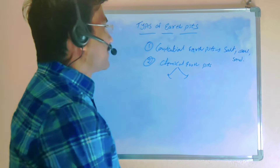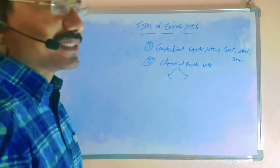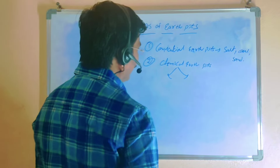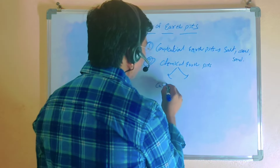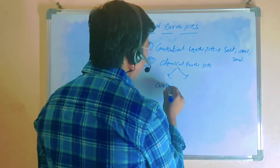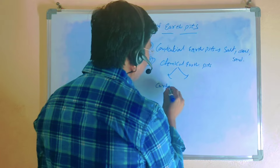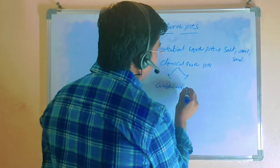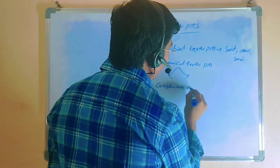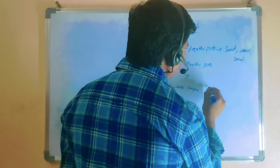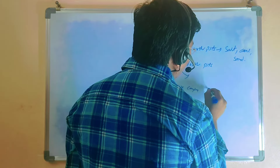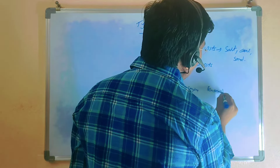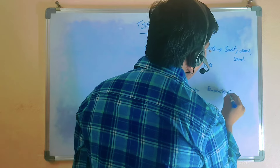If you go for the chemical earth pits, there are two types of chemicals available. The first one is a carbon-based compound, and the second one is a bentonite compound.